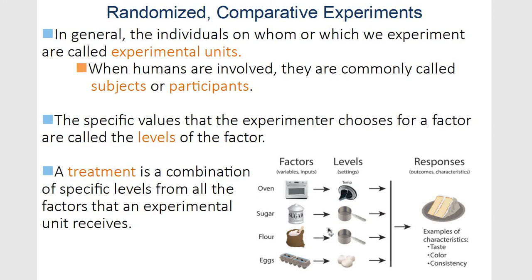Here's an image to make it easier to see. If I wanted to see how the oven affected the outcome of my cake — see if it tasted better — one of my factors could be the oven setting, and then different levels of the temperature: baking it at 300, 325, 350, 375, or maybe 400 for a very small amount of time.